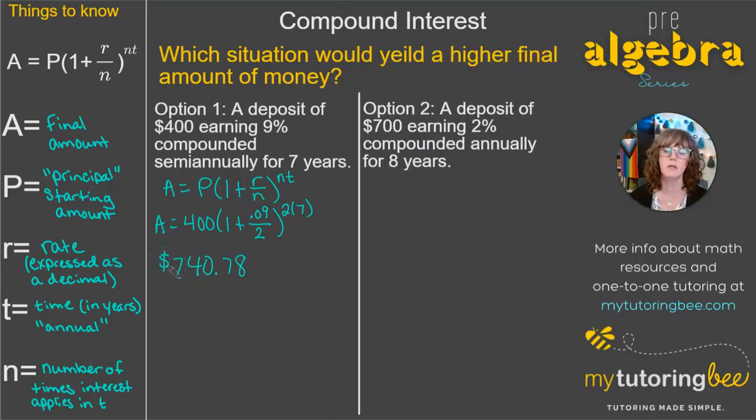Okay, so that is how much money we would have in an account with option 1. Let's see what option 2 gives us. So again, A equals P times 1 plus R over N to the Nt. I do usually like to rewrite out the formula just to make sure that I'm not skipping any steps, missing any pieces. So A equals, our principal for this one is 700. 1 plus our rate is 2%, so 0.02.